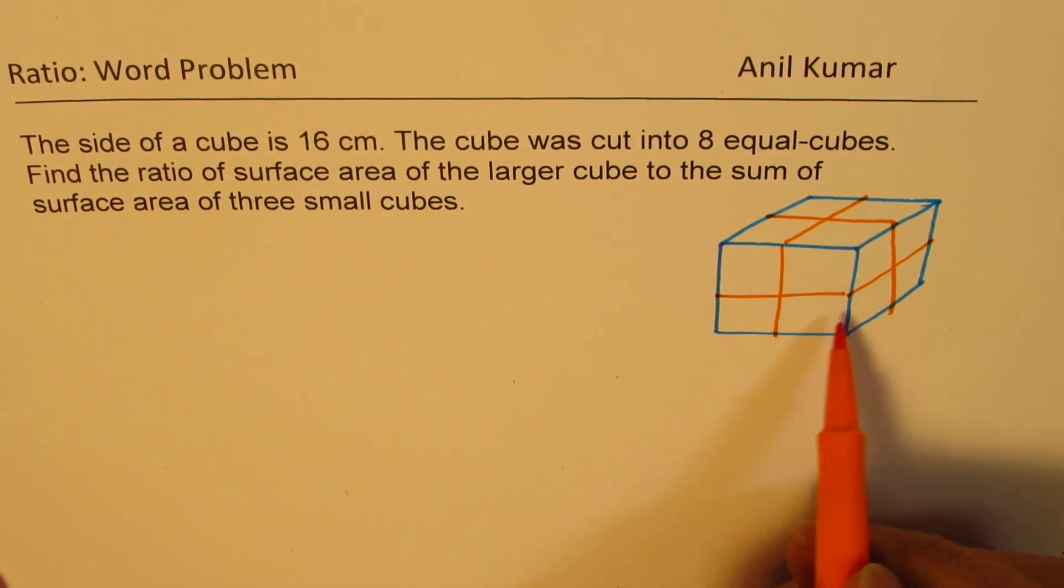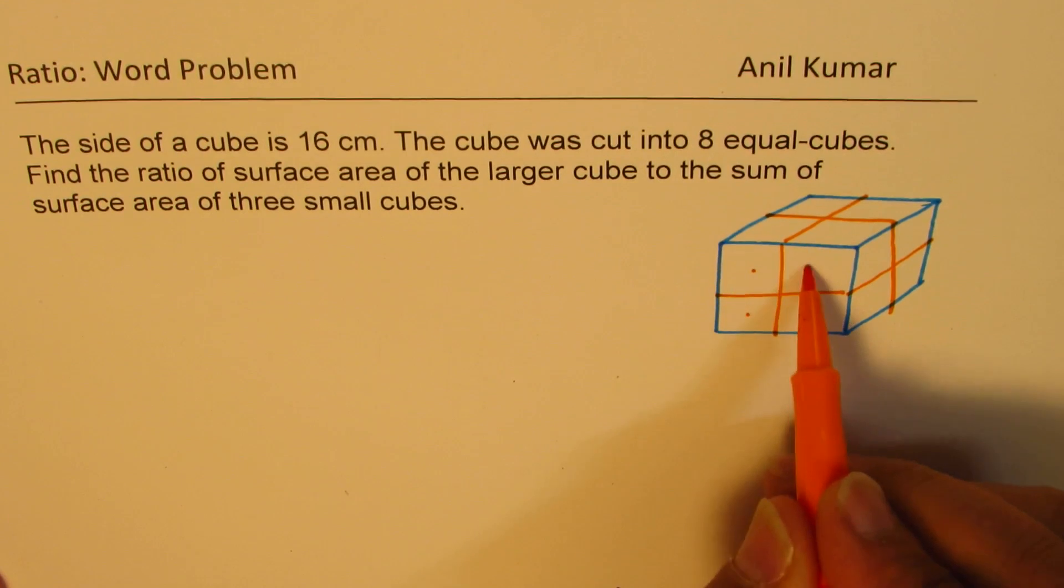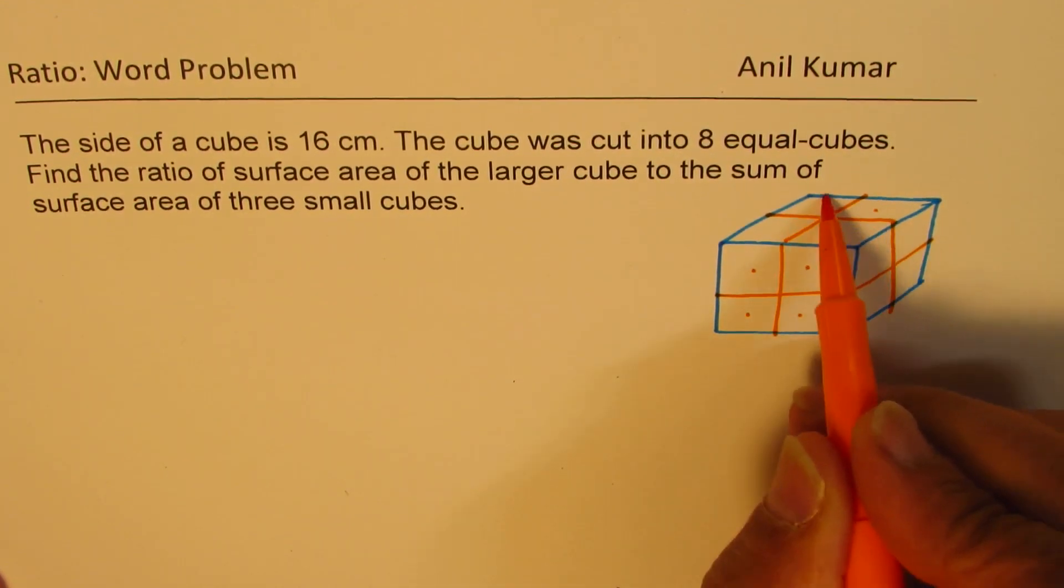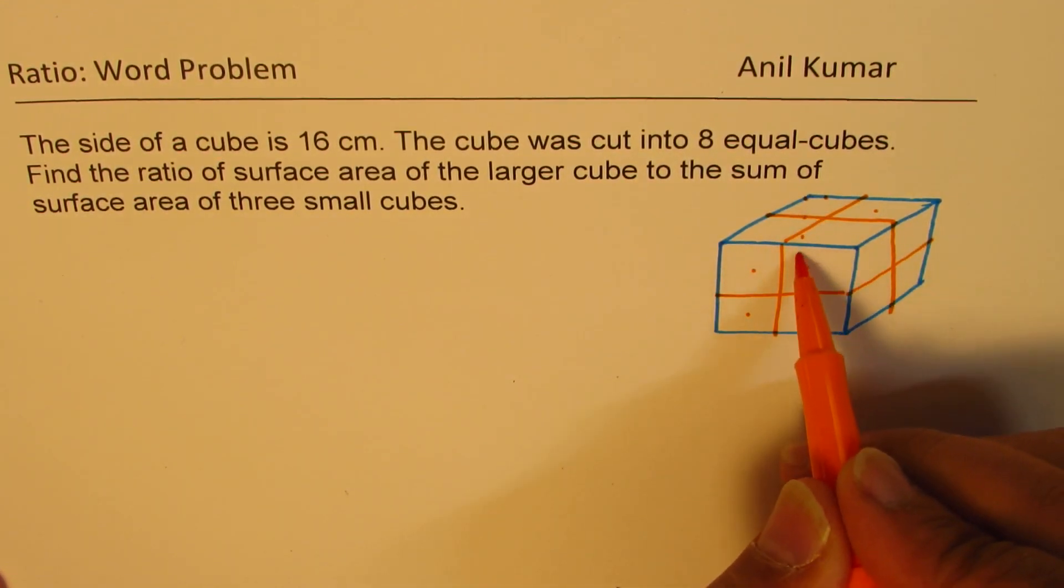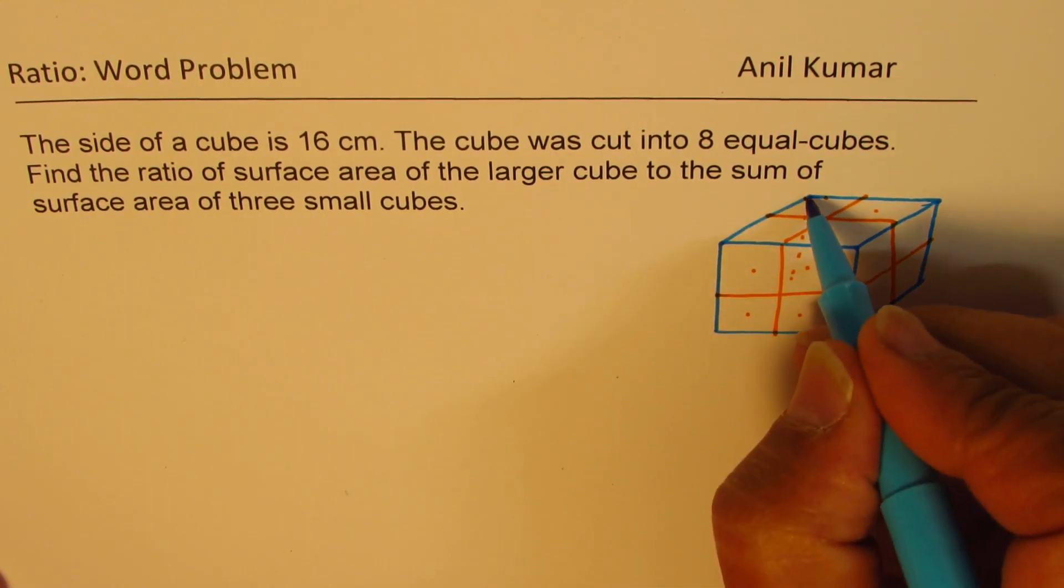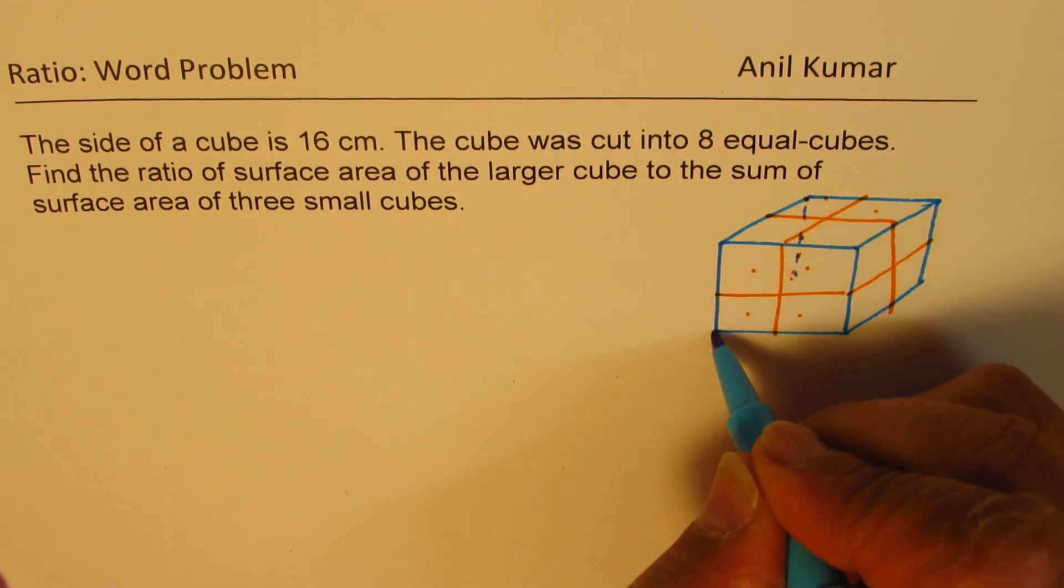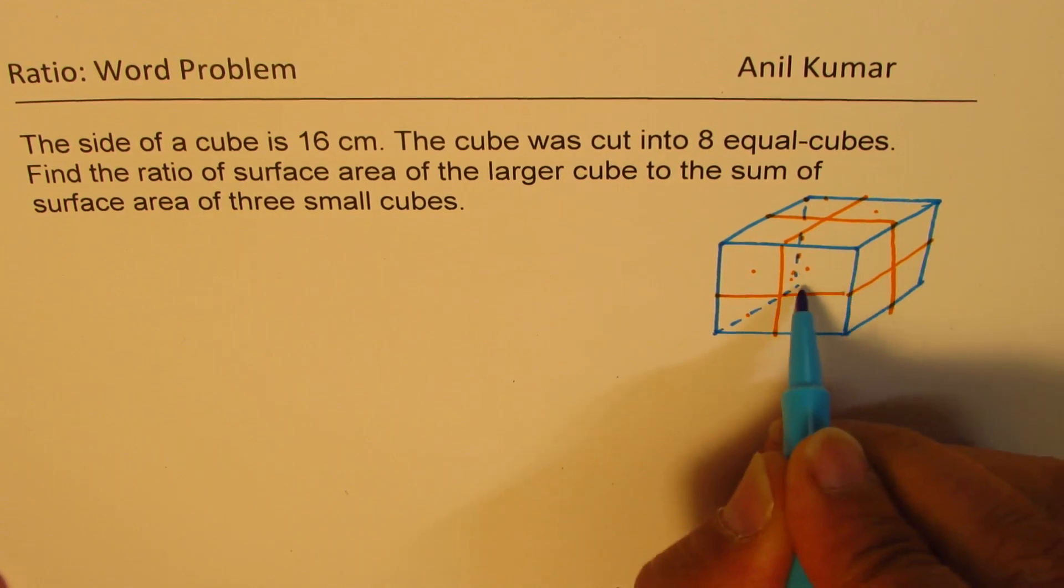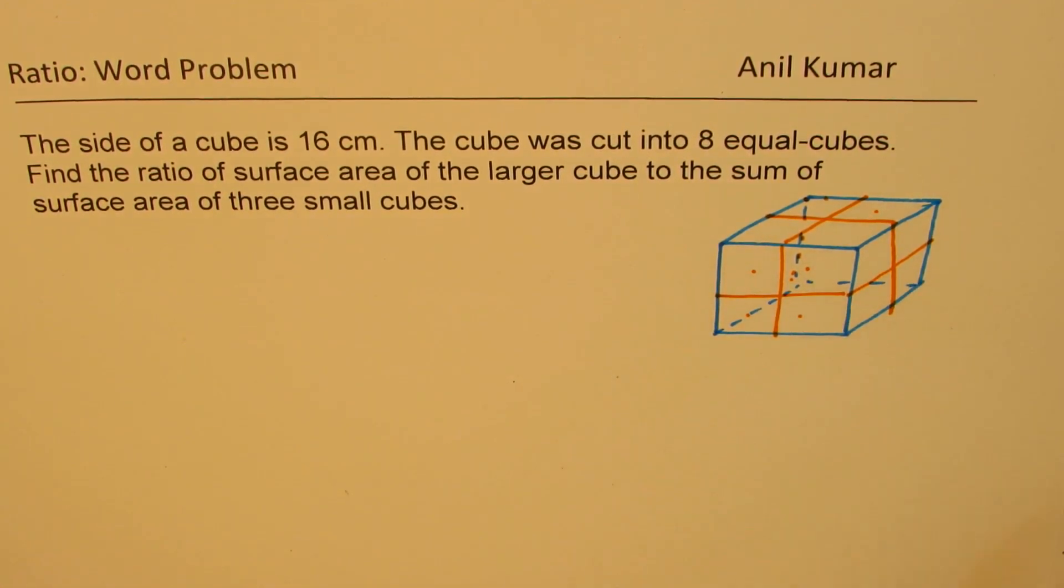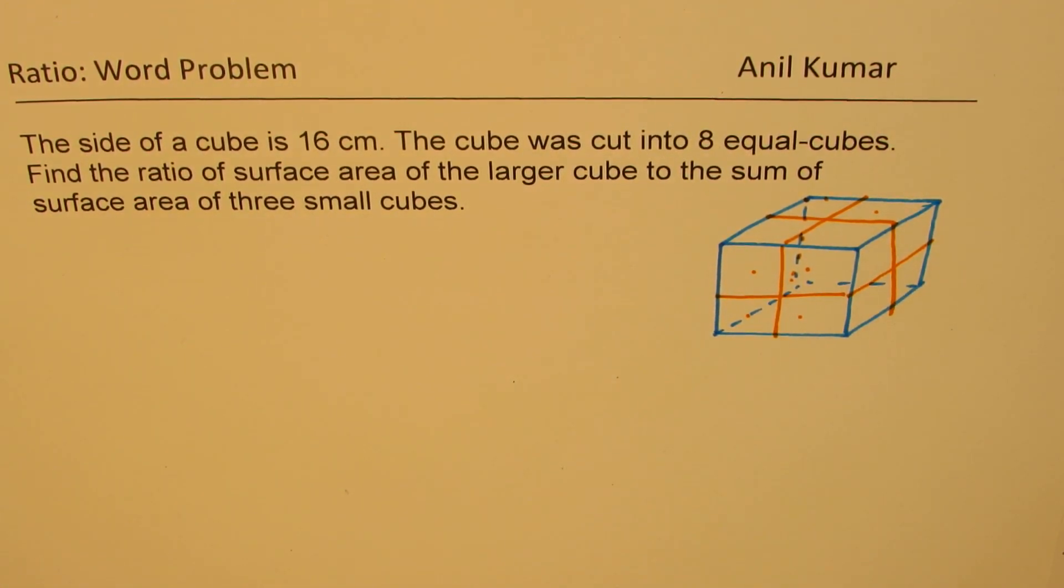So what we see here is we have a cube which is one, two, three, four, five, six, seven, eight. So let's complete it. So you can see we get eight cubes out of it.